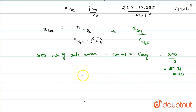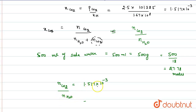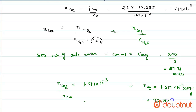Now, putting these values, total moles of carbon dioxide is equal to the mole fraction 1.517 × 10⁻³ multiplied by total moles of water, which we have already calculated as 27.78. After multiplying these values, we get total moles of carbon dioxide equal to 42.14 × 10⁻³ moles. So this is our number of moles of carbon dioxide.